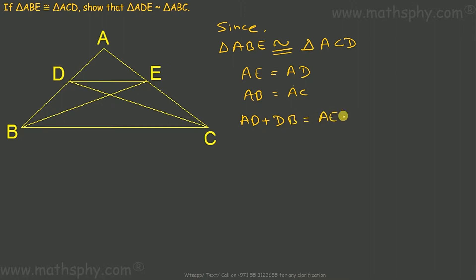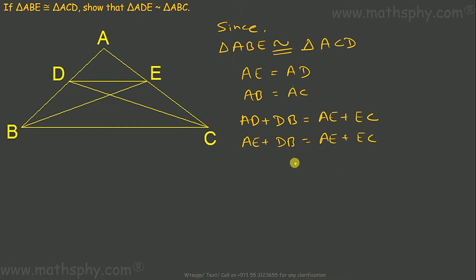Now AB can be written as AD plus DB, and AC can be written as AE plus EC. Since AE equals AD, in place of AD I can write: AE plus DB equals AE plus EC. The AE cancels, so DB equals EC.